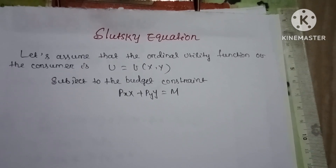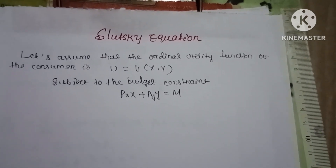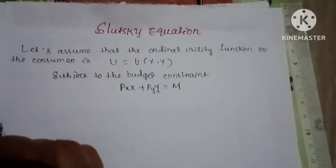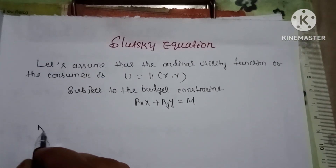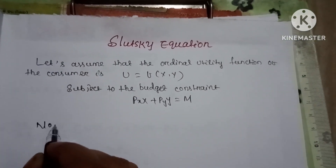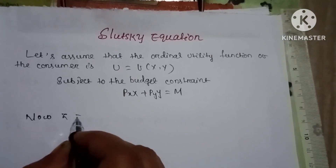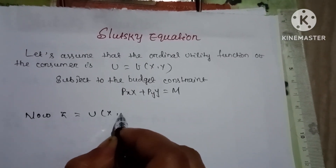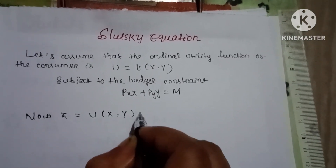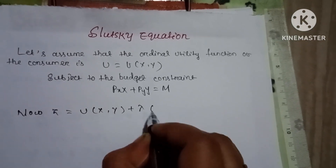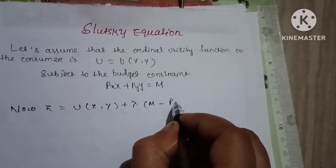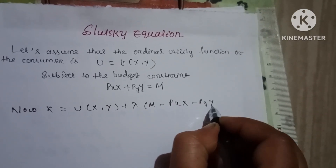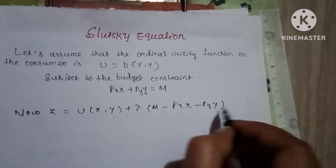To form a composite function, we write z equal to u(x, y) plus λ into (m minus px·x minus py·y).